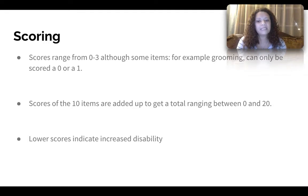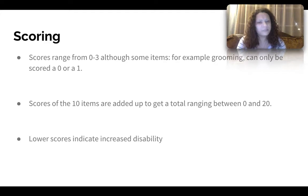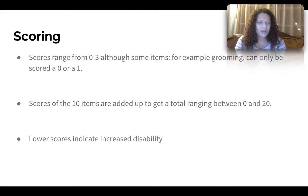Lower scores indicate increased disability — the lower the score, the more assistance they'll need with that ADL. Typically you want to gather all information for the first Barthel scoring within the first two days. Some of it may come from the initial evaluation, and the rest during your first treatment session or from the medical chart, family members, or interdisciplinary team members. Really, 24 hours is probably all you need.